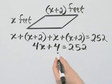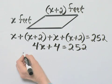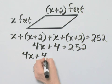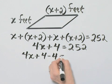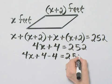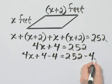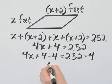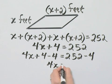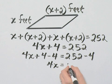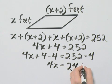And then if we subtract 4 from both sides, let me go ahead and show that. I'll subtract 4 from the left side. I'll subtract 4 from the right side. Left side I'll have 4x. And then the right side 252 minus 4, that is 248.